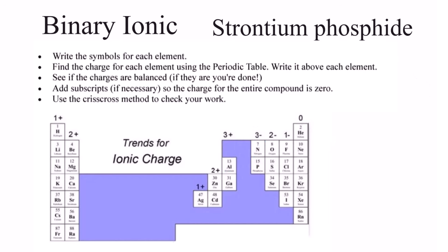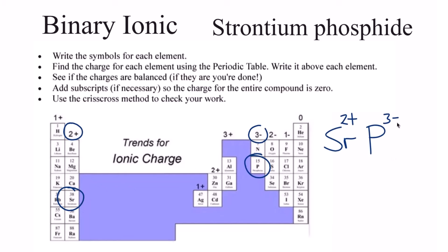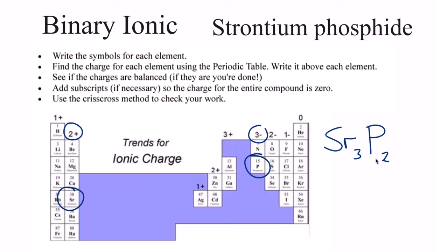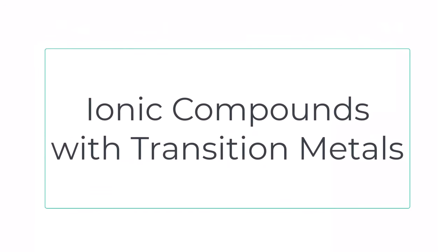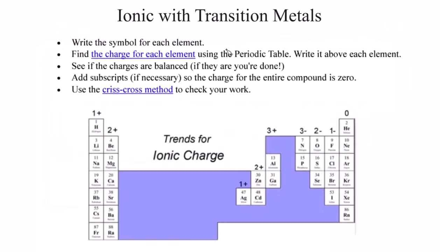Here's the test — strontium phosphide. Using the crisscross method, move the three here and the two here, get rid of the charges: Sr₃P₂. If you check the charges they are balanced. Those are the binary ionic compounds.